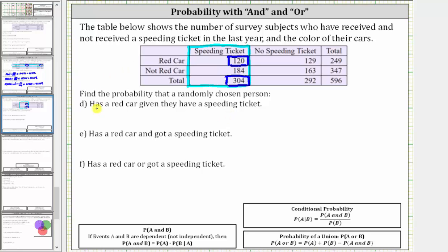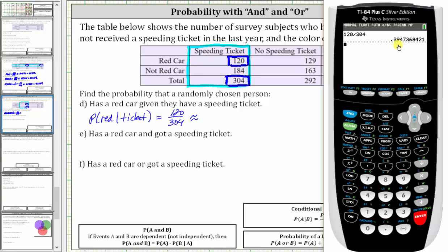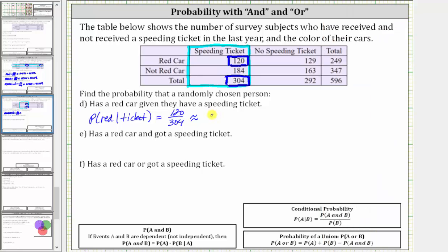We indicate this as the probability of a red car given they have a speeding ticket — given a ticket — which is 120 divided by 304. To four decimal places, we have approximately 0.3947, which is equal to 39.47%.